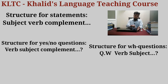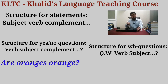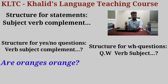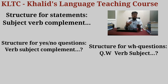Another example: oranges. Orange is a fruit and also a color in English. The word 'orange' in English refers to both the fruit and the color. So oranges are orange — we can apply all three steps to this example as well.